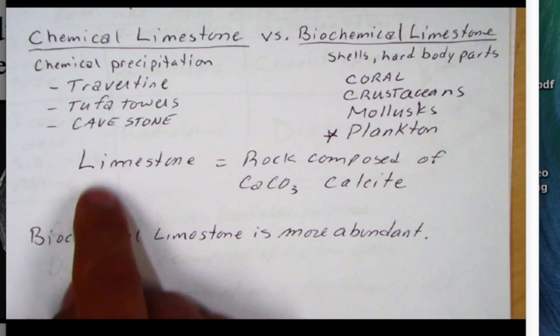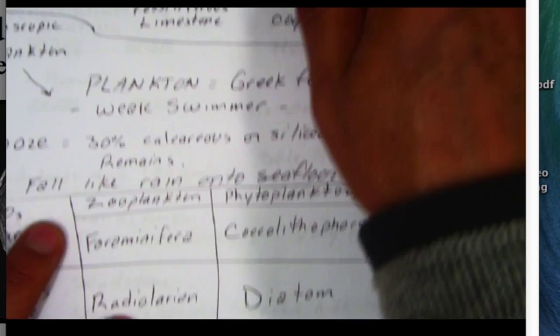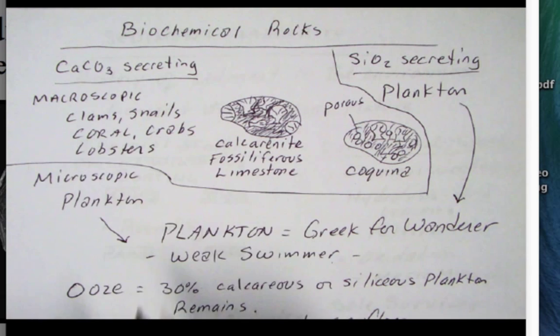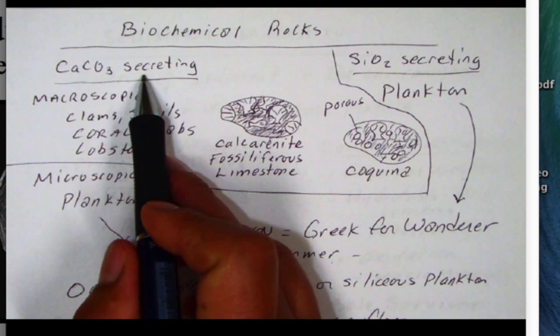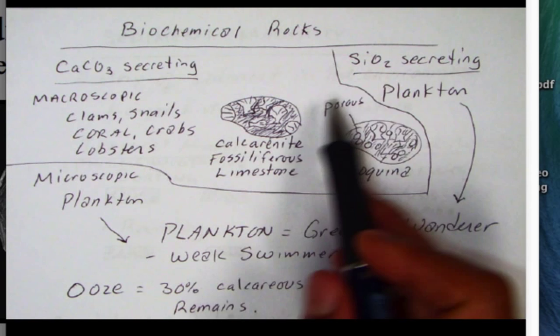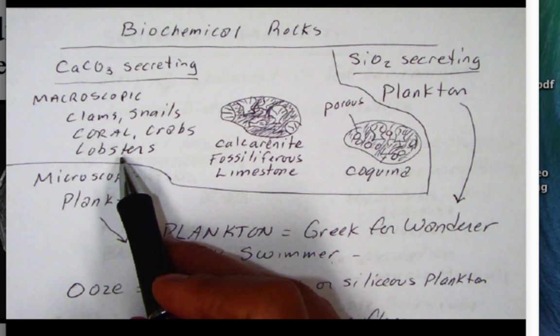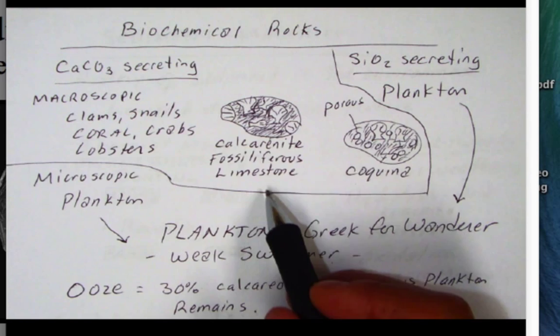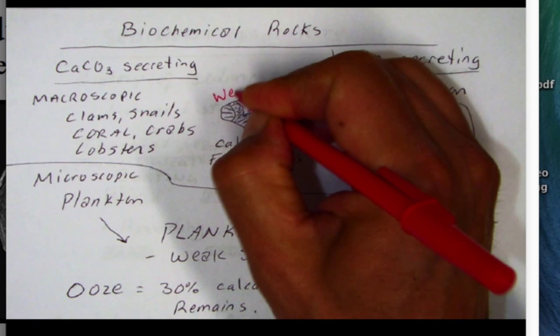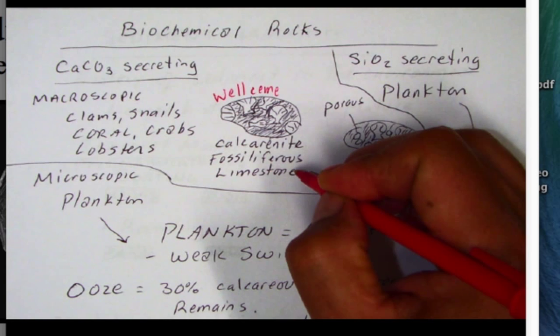Now let's look at some of these biochemical rocks. There are two groups: one group secretes calcium carbonate — taking calcium and carbonate from seawater and making their shells — and other organisms take silica out of water to make their shells. For the calcium carbonate macroscopic organisms, there are clams, snails, corals, crabs, and lobsters. The well-cemented rock is called a fossiliferous limestone or calcarinite.